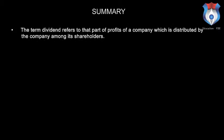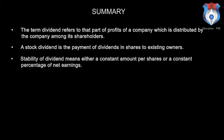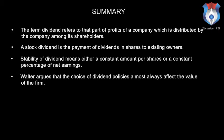Summary. To summarize what we have learnt in this lecture: the term dividend refers to that part of profits of a company which is distributed among its shareholders. A stock dividend is the payment of dividends in shares to existing owners. Stability of dividend means either a constant amount per share or a constant percentage of net earnings. Walter argues that the choice of dividend policies almost always affects the value of the firm.